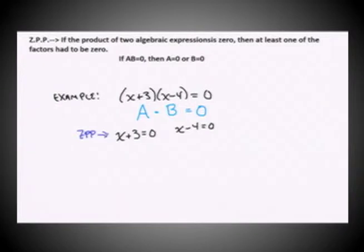Then it's easy from here. You simply solve for x in each of these equations. So here I would subtract three from both sides and find that x is equal to negative three.